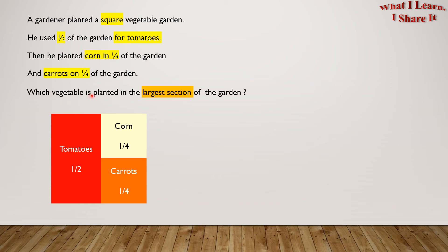Which vegetable is planted in the largest section of the garden? As we see here, it is clear that the section of tomatoes is the largest. Tomatoes are planted in the largest section. Yay! We solved the problem.